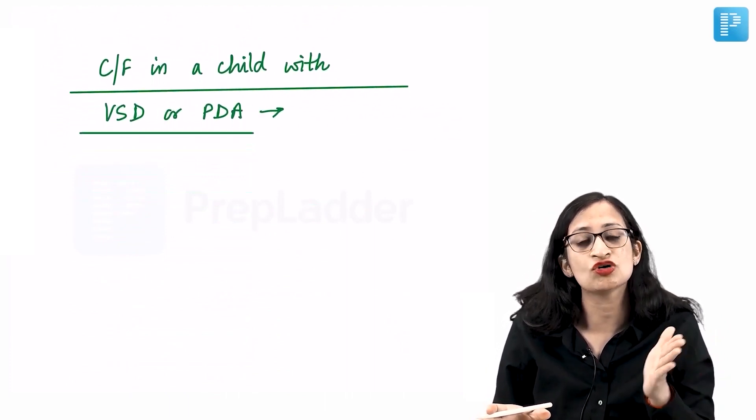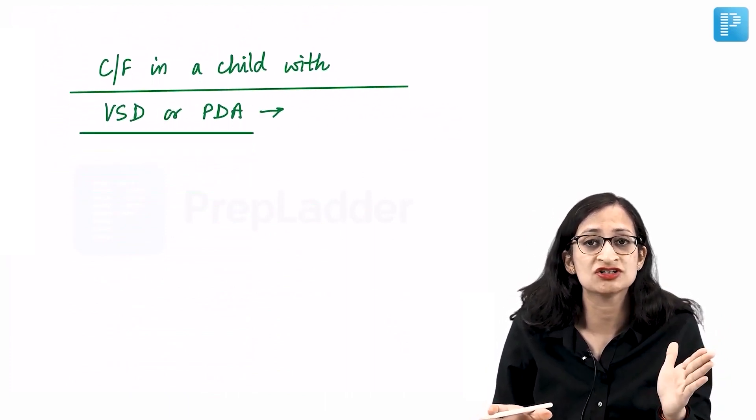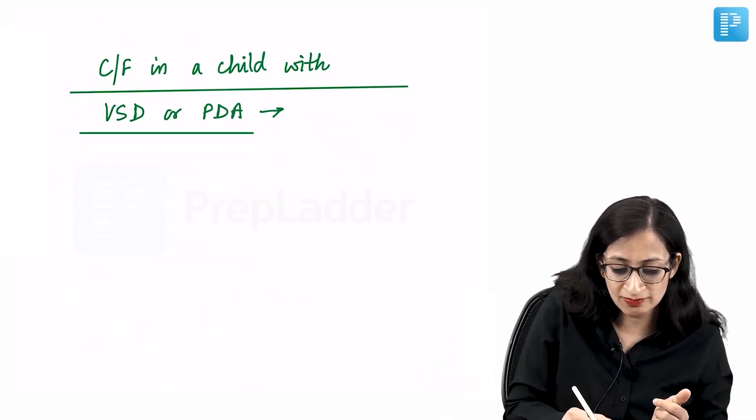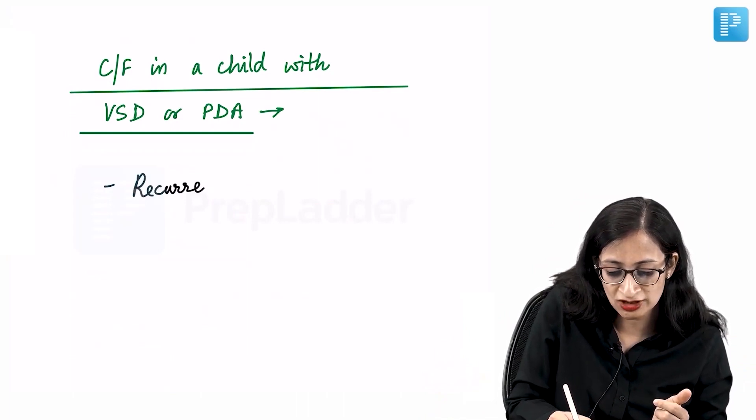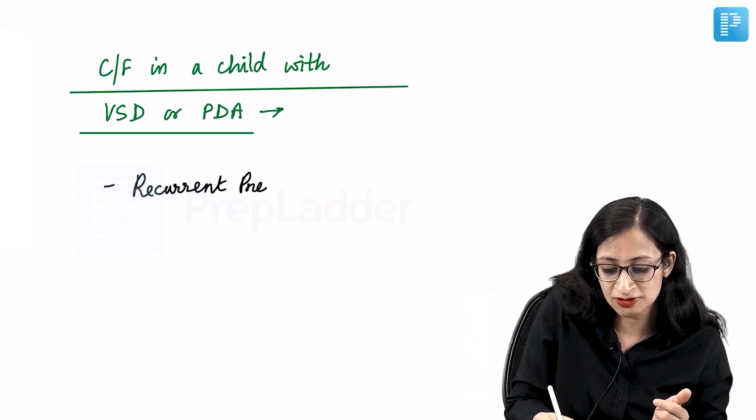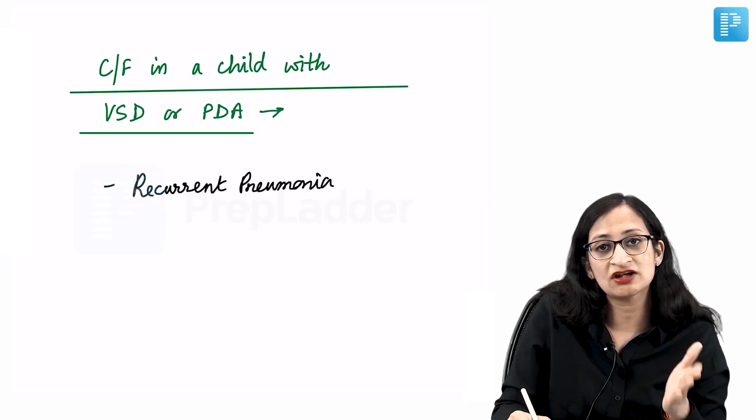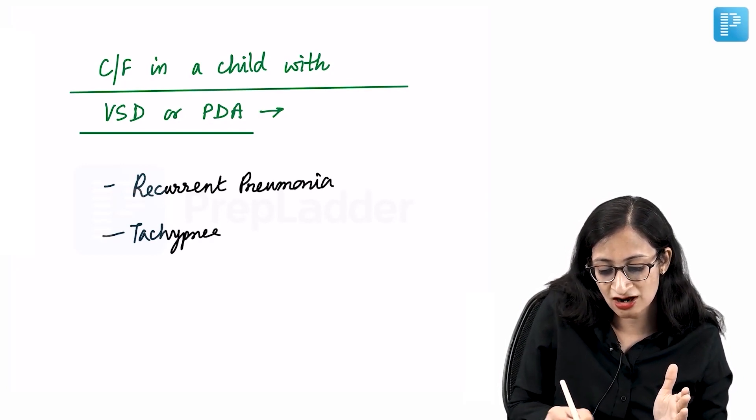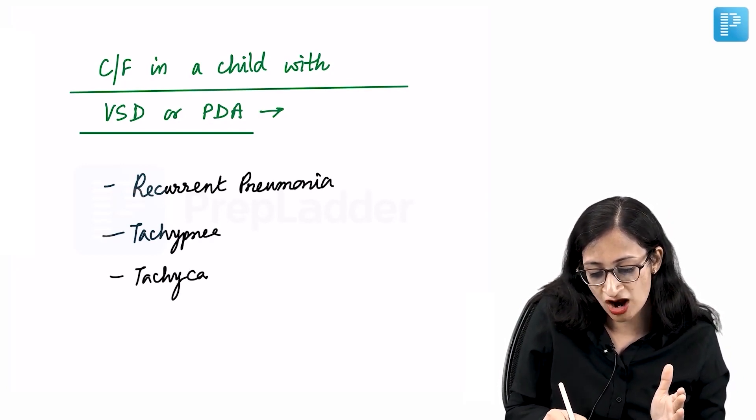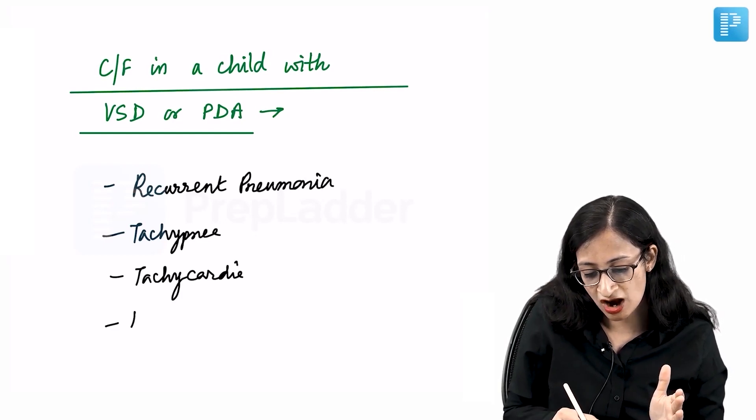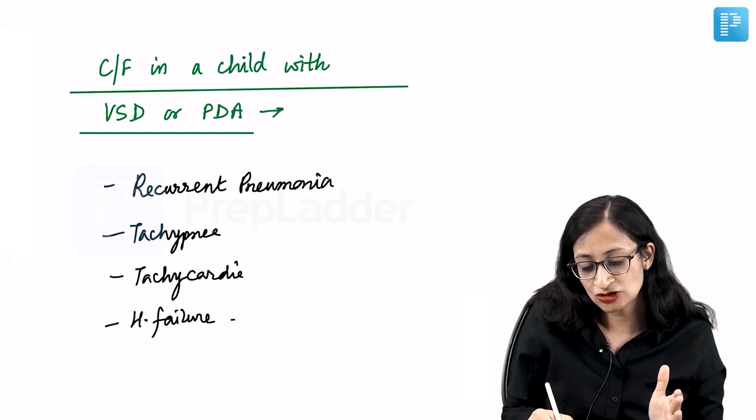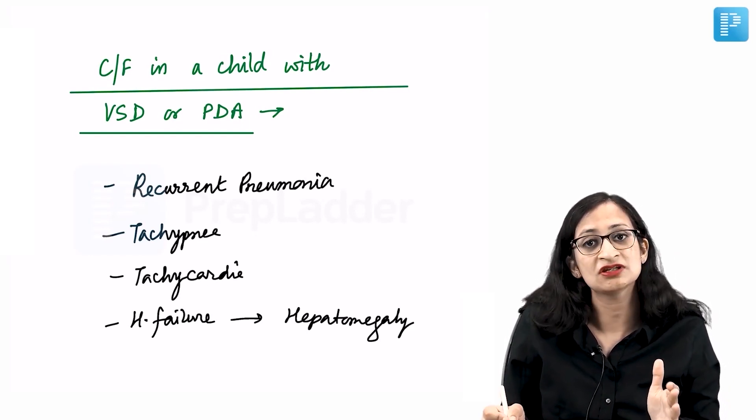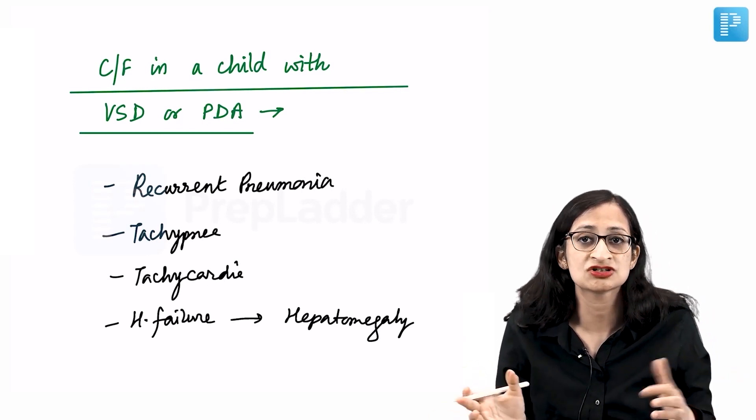Clinical features in a child with VSD or PDA with left-to-right shunt: Excess blood goes to the lungs, causing recurrent episodes of pneumonia and respiratory tract infections. There will be recurrent fever, tachypnea, fast breathing, and tachycardia. These children will have features of heart failure including hepatomegaly, congestive hepatomegaly, and respiratory distress.